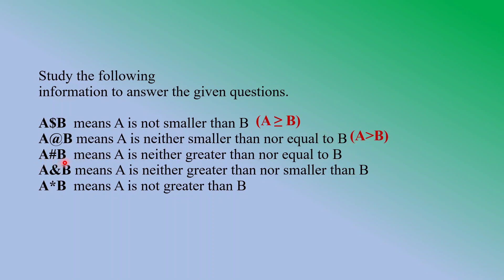Now, a# b means a is neither greater than nor equal to b, so a is smaller than b. And a* b means a is neither greater than nor equal to b, which means a is smaller than or equal to b. So these different signs of inequality were coded in these symbols, and here I have decoded and explained the meaning of these symbols.